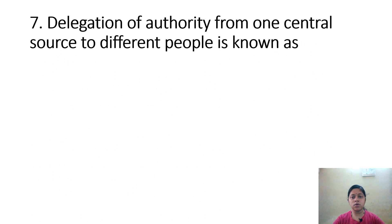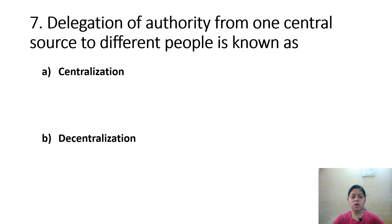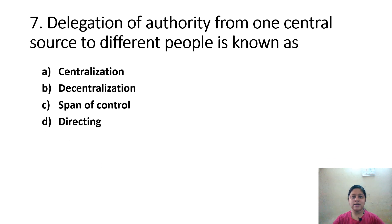Delegation of authority from one central source to different people is known as: Option A, Centralization; Option B, Decentralization; Option C, Span of Control; Option D, Directing. Correct answer is Option B, Decentralization — authority is delegated from one central source outward.